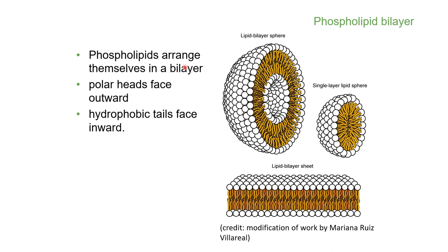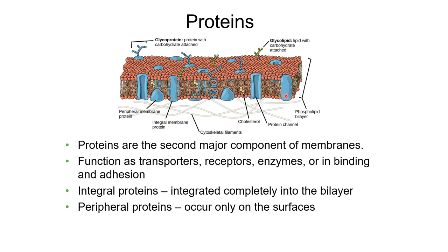You'll often hear these membranes called phospholipid membranes or a phospholipid bilayer because they arrange themselves in two layers. Our polar heads are facing outward and our hydrophobic tails are facing inward, keeping water out. The inside and outside of this membrane - our water-loving ends - would be touching either water or an aqueous solution like cytosol or cytoplasm.